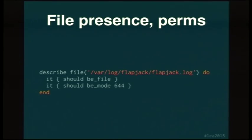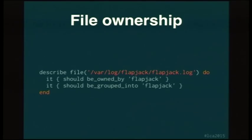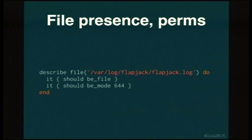File presence and permissions: the log file should be created, it should be a file — not a symlink or directory — and it should have defined permissions. There's a question about what happens if you've got setUID on that file. That's a good question — I don't think anyone's actually thought of that yet. We certainly haven't needed to use it in the Flapjack project. We can look up the docs after the main presentation and check it out.